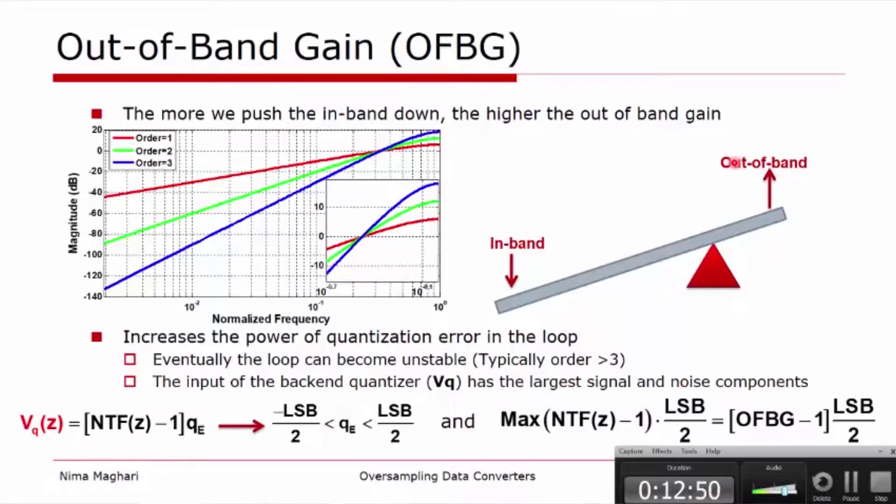Although the out-of-band is not of interest in terms of calculating your signal-to-noise ratio, in the transfer function that will affect the stability of the modulator given that this is a feedback system. And every time we have a feedback system we have to think about the stability. And with a simple calculation we can see that given that the quantization error is between positive and negative LSB over 2, the maximum out-of-band gain affects the amount of power that the quantization sees, the amount of power of the signal we call VQ here.